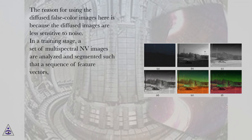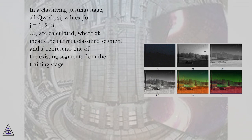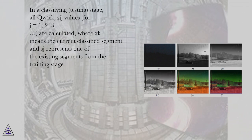In the training stage, a set of multispectral NV images are analyzed and segmented such that a sequence of feature vectors sj can be computed, and the LUT mapping between sj and c can be manually set up based on experimental results. In the classifying (testing) stage, all similarity values q(xj, sj) for j equals 1, 2, 3, ... are calculated, where xj means the current classified segment and sj represents one of the existing segments from the training stage.